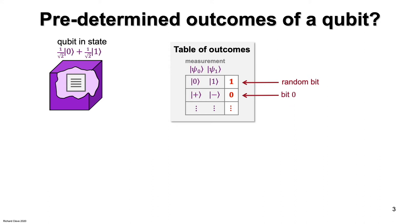And for every other potential measurement, there is an entry in the table containing a bit that is sampled with the appropriate probability distribution for that measurement. That's a lot of information.